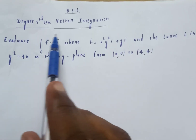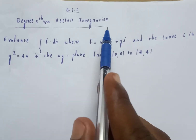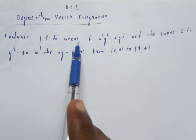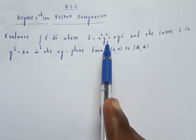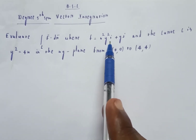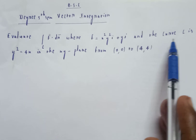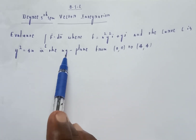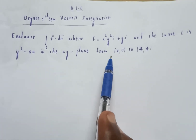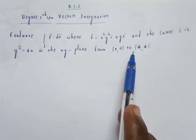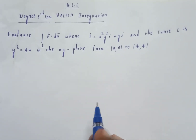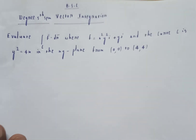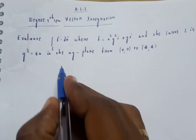Welcome to my channel. BSc degree. Problem: evaluate the integral over curve C of F dot dr, where F is equal to x squared y squared i plus y j, and the curve C is y squared equal to 4x, in the xy plane from (0,0) to (4,4).